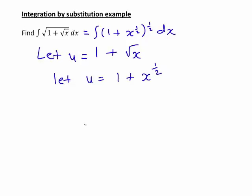So we can see that that first part will be replaced with u to the one half. But what about dx? Well let's work out du/dx to see what will happen. Differentiating 1 plus x to the half with respect to x: 1 just has a derivative of 0 and x to the half, that will become a half x to the negative a half.